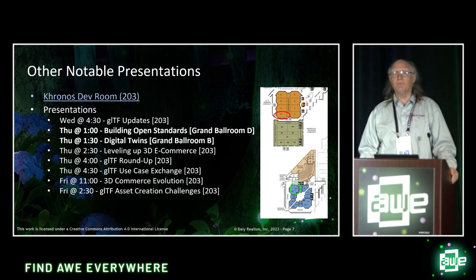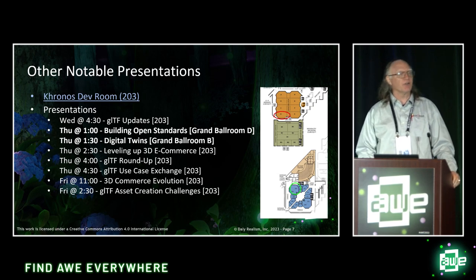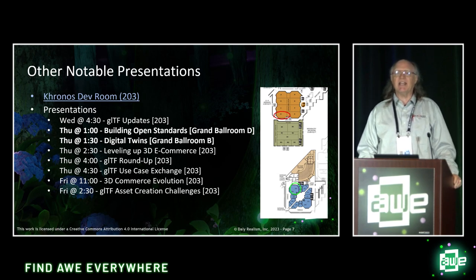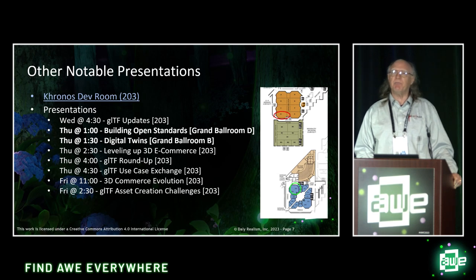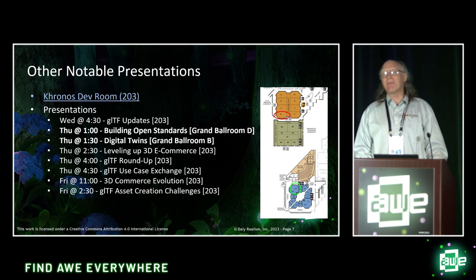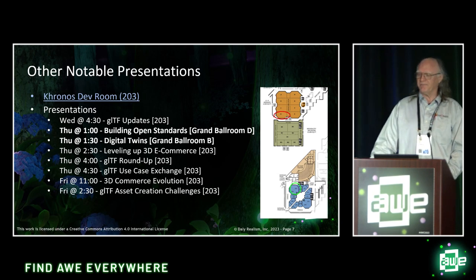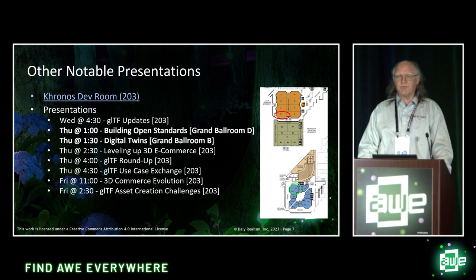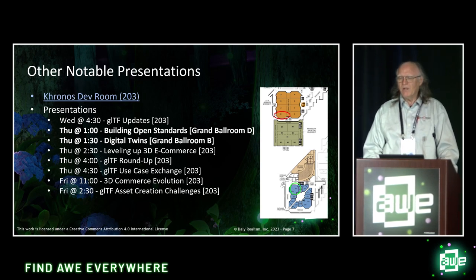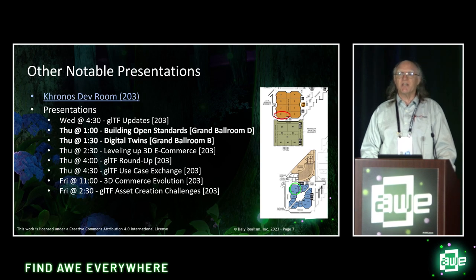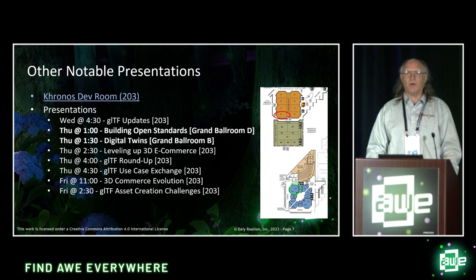Khronos also has a developer BOF room up in the VIP area on the second floor — it's a circle in green on the map. Take the escalators, go to your left; if you see a sign that says 'VIP' you're in the right place, and you go into room 203. The presentations there include two sessions tomorrow at 1 and 1:30 in grand ballroom D and down the hall at B, going into a lot of detail about GLTF.